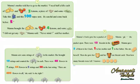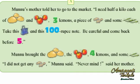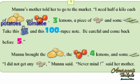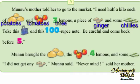Let's read the first paragraph A. I need half a kilo each of potatoes and tomatoes, three lemons, a piece of ginger and some chilies.